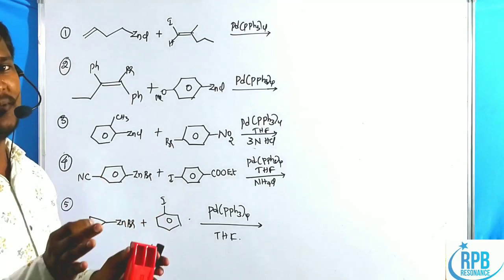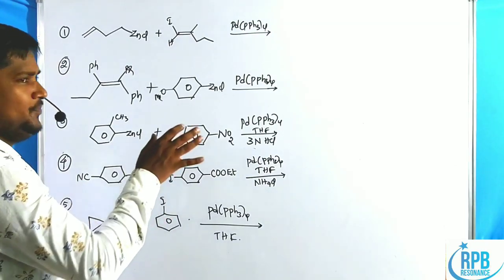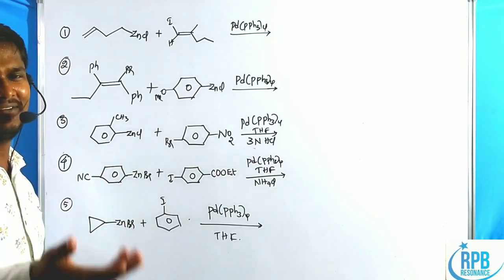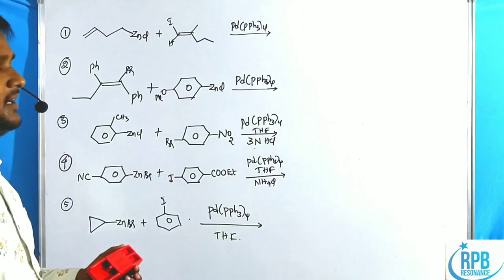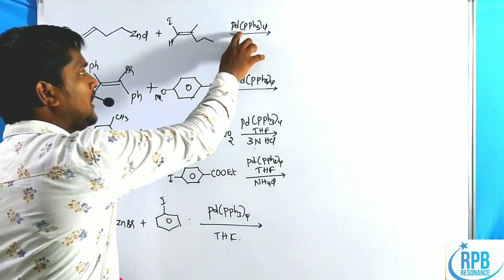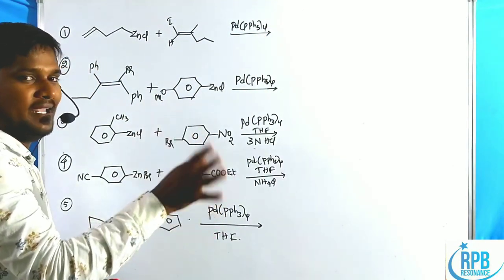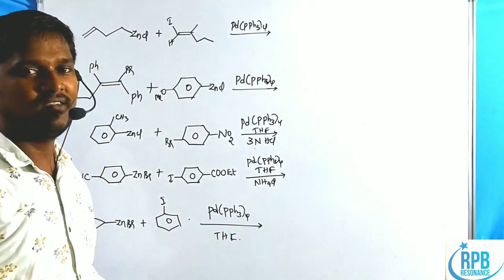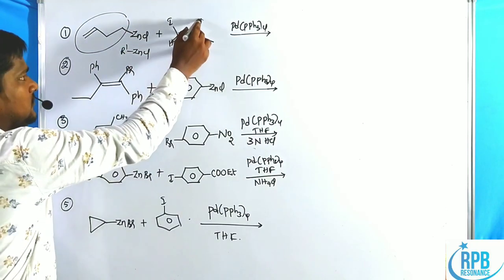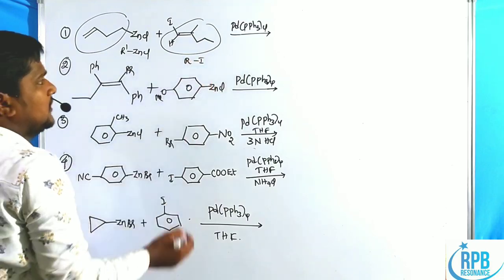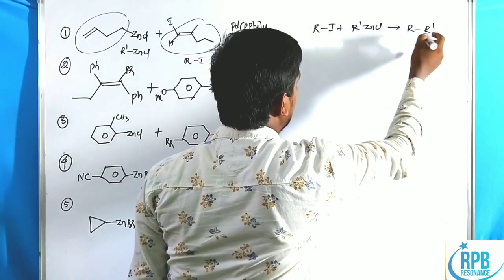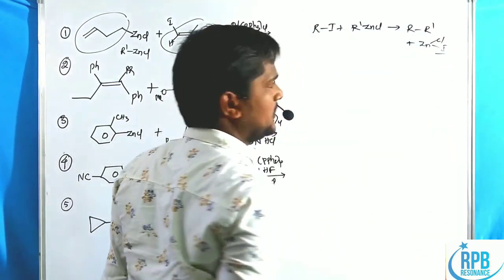In general, Negishi coupling means an organozinc reagent treated with an alkyl, aryl, or organic triflate — that is, an electrophilic alkyl halide or aromatic halide — with palladium(PPh₃)₄ or a nickel catalyst gives the new C-C single bond formation product. So R-I treated with R'-ZnCl gives R-R'; the by-product is ZnClI.